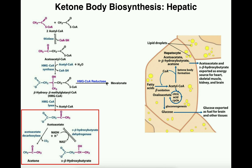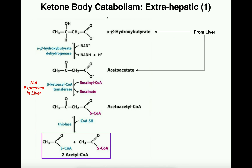This is a process that's going to be pretty much exclusively hepatic. When we have excess acetyl CoA from fatty acid beta-oxidation, we can form ketone bodies, and once we form these we can dump them into the blood where they will travel to peripheral tissues such as skeletal muscle, the brain, and the heart, to be utilized for energy production — which we look at in the next video.